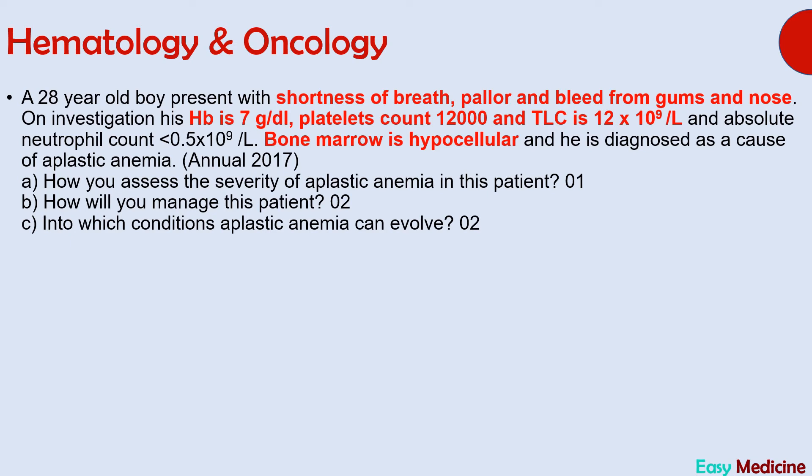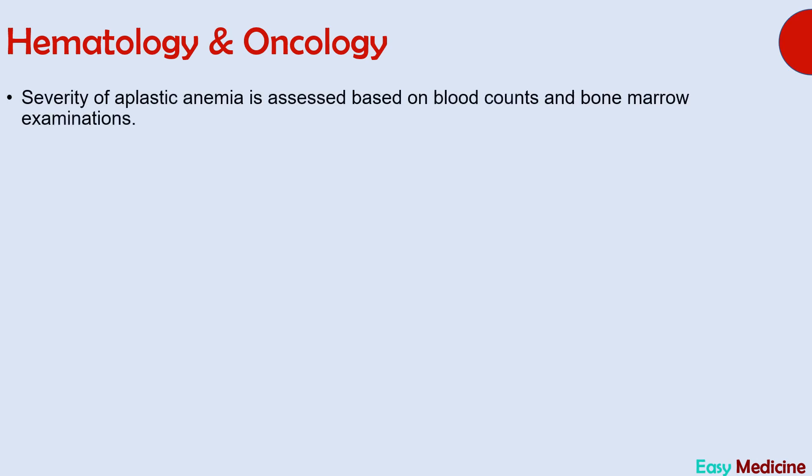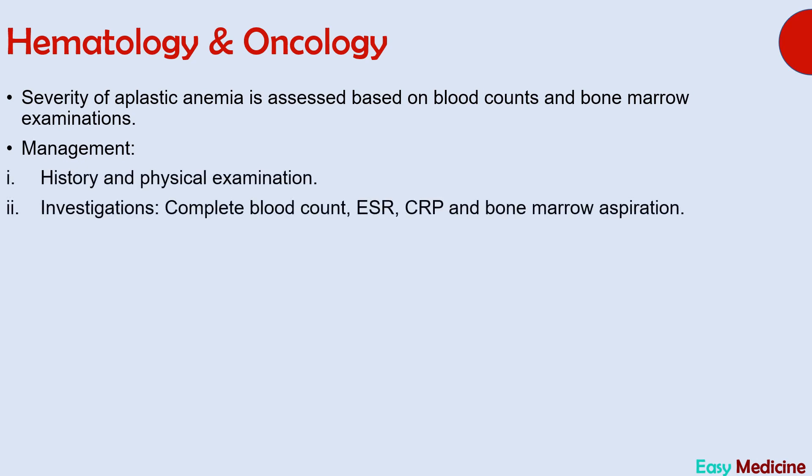The next diagnosis is aplastic anemia. Important points are shortness of breath, pallor, and bleeding from gums and nose, with investigations showing pancytopenia — low hemoglobin, low platelets, and low white cell count. The most important diagnostic point is hypocellular bone marrow. Severity of aplastic anemia is assessed based on blood counts and bone marrow examination. Investigations include complete blood count showing pancytopenia, ESR, CRP, and bone marrow aspiration which shows hypocellular marrow.